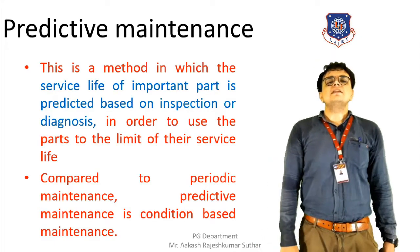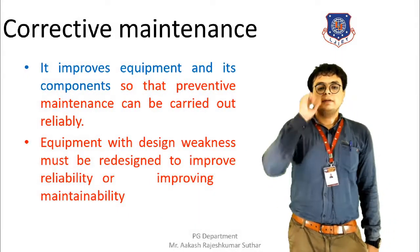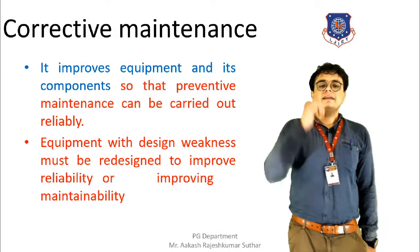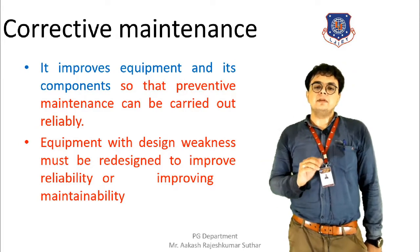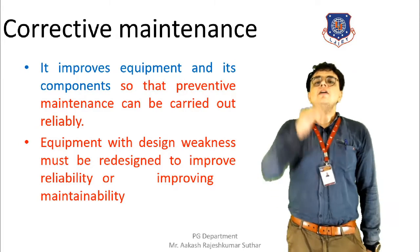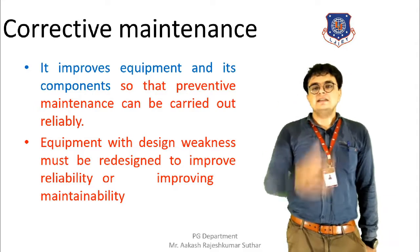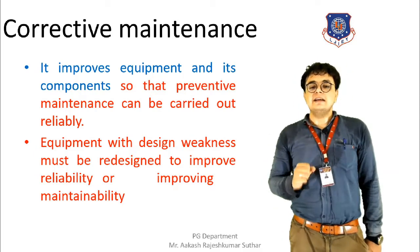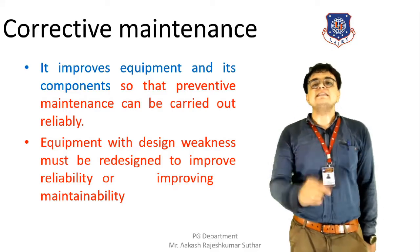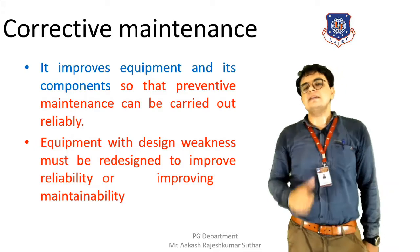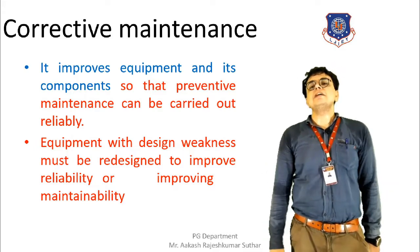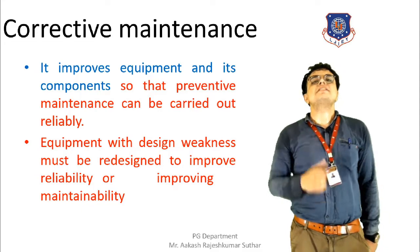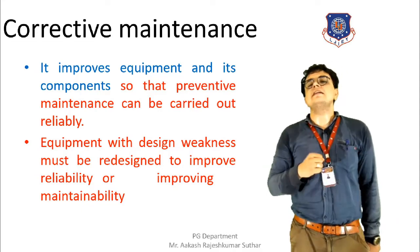Moving towards the next type — corrective maintenance. Corrective maintenance mainly improves the equipment and its components, and by doing so, preventive maintenance will be carried out. In this method, the weaknesses of the machine are identified previously. By redesigning or doing some improvement work, we will rectify that weakness. As a result, a good condition of the equipment can be maintained and the design life of the machine will be raised, giving it good productivity and efficiency.